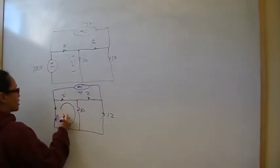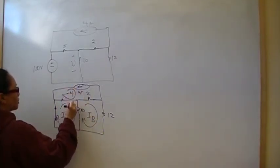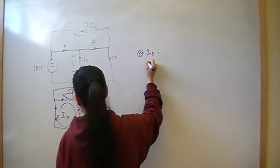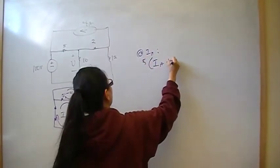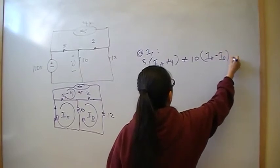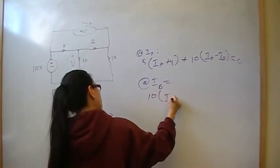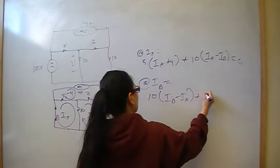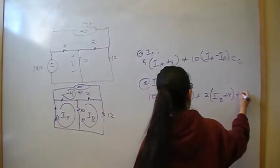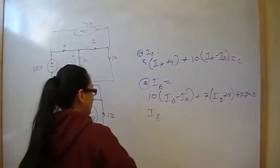So here I have some Ia and here I have some Ib. And here I have negative 4 amps. So I'm just going to start writing my mesh equations. So mesh at Ia gives me 5 times Ia plus 4 plus 10 times Ia minus Ib equals 0. Mesh at Ib will give me 10 times Ib minus Ia plus 2 times Ib plus 4 and then plus 12 Ib equals 0. Now I'm going to set up my matrix of Ia and Ib and solve for that.